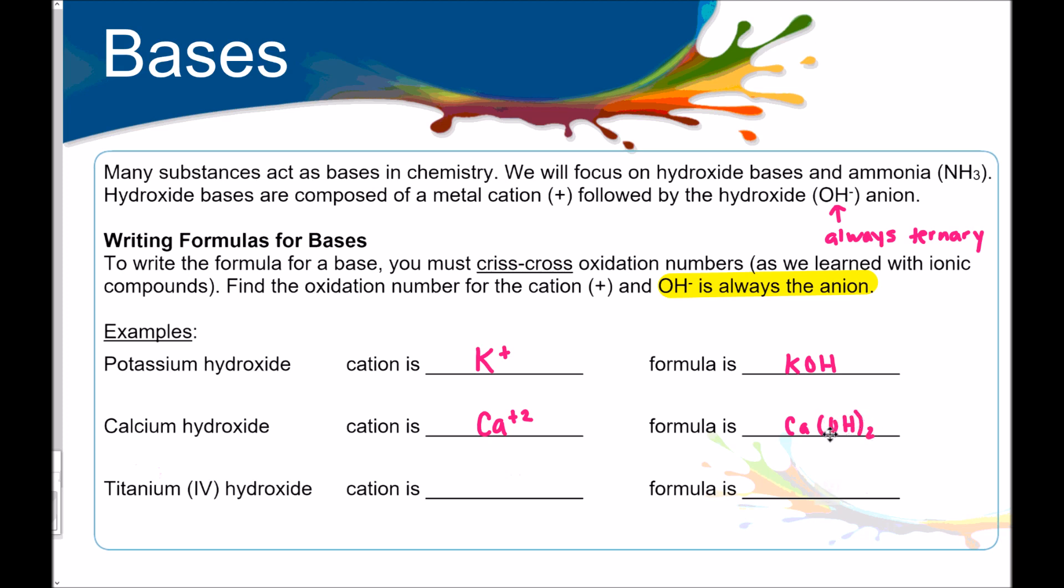Remember, OH is a polyatomic ion. So, you have to protect it with parentheses. And then this last one here, titanium four hydroxide. Plus four is titanium's oxidation number. So, when we crisscross, we get Ti(OH)4 in parentheses with the four outside.